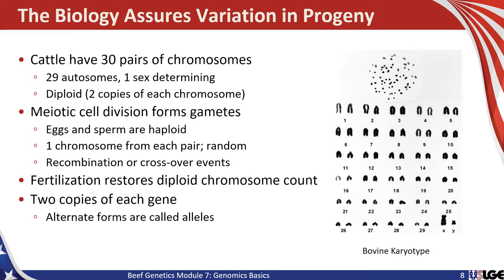Here in the image is a bovine karyotype, or an image of the 30 pairs of chromosomes from cattle organized from the largest, chromosome one, to the smallest, chromosome 29. And then we have X and Y, which are the sex-determining pair. This animal happens to be a male.